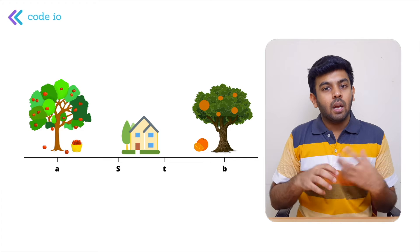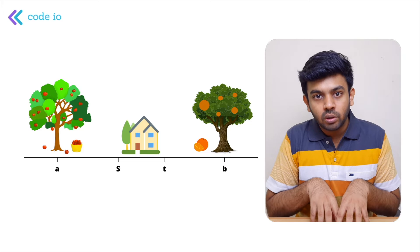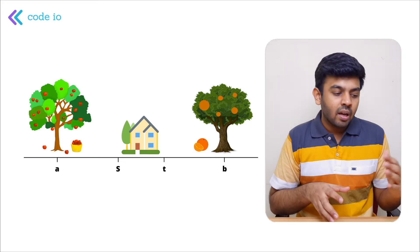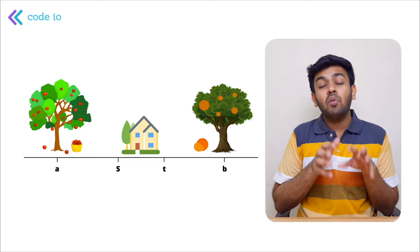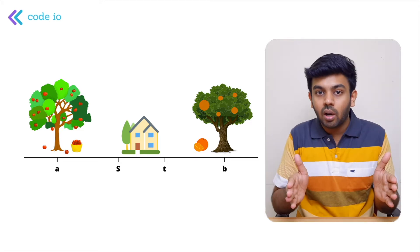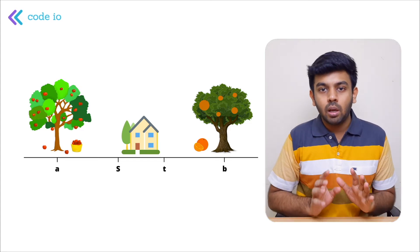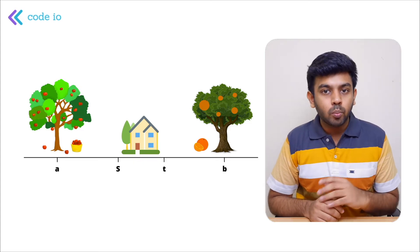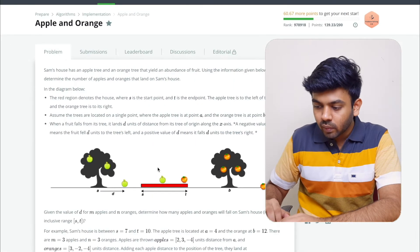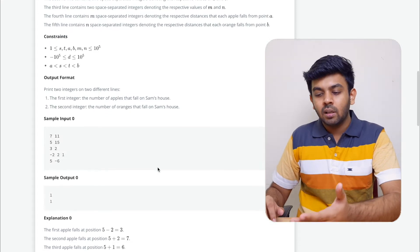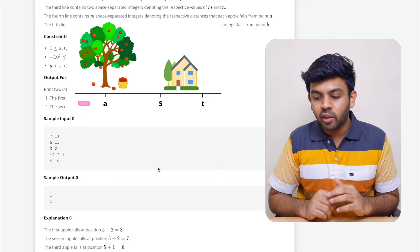To summarize: calculate the position of each fruit using the tree's position plus the given distance, then check if it falls within the range of your house. That is the problem. Now we'll program this and solve it. The input format is as follows: the first line has the S and T values — the starting and ending points of your house.